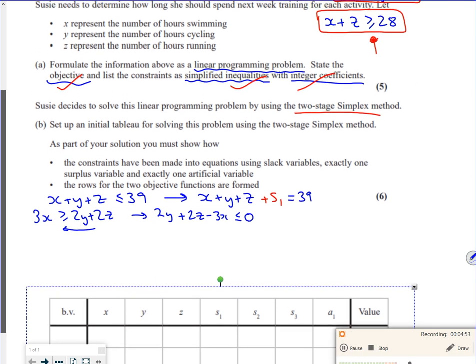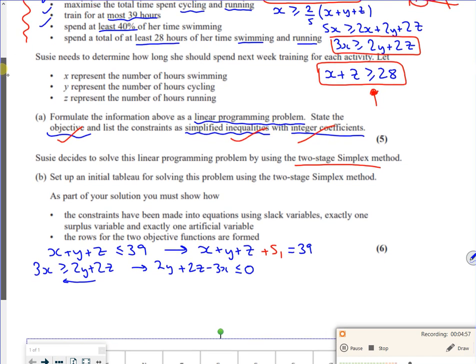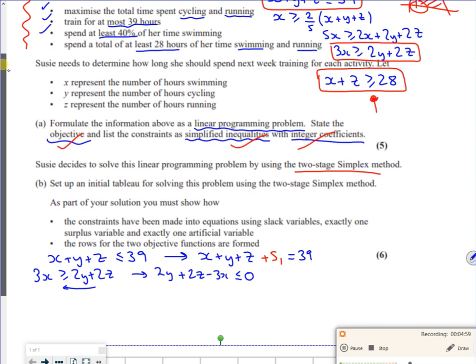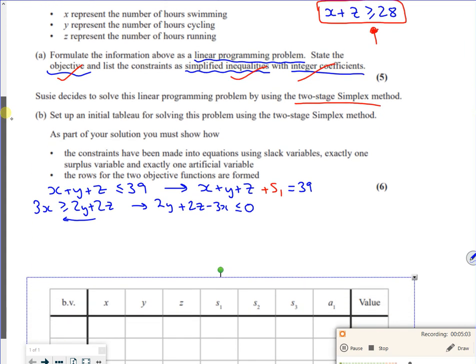So I've done that. That will transform as minus 3X plus 2Y plus 2Z plus s2 is equal to zero.